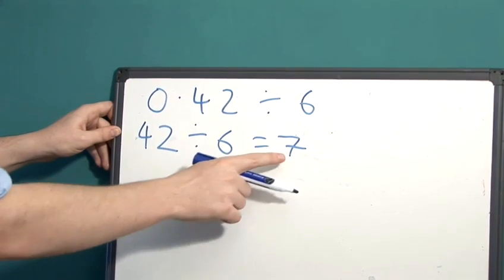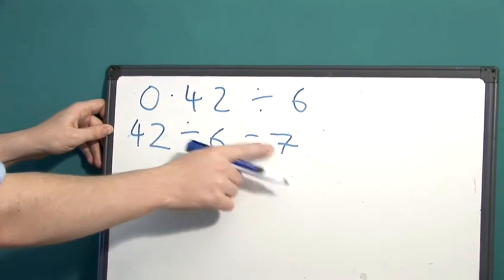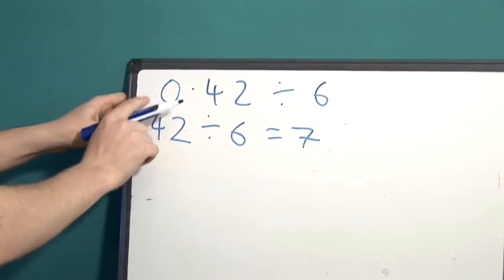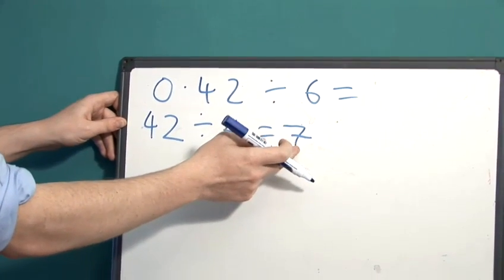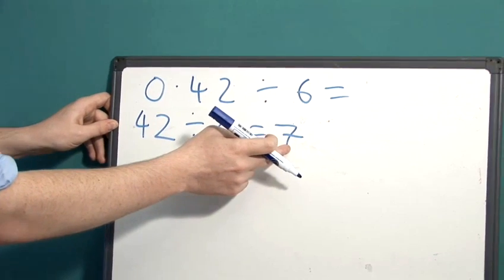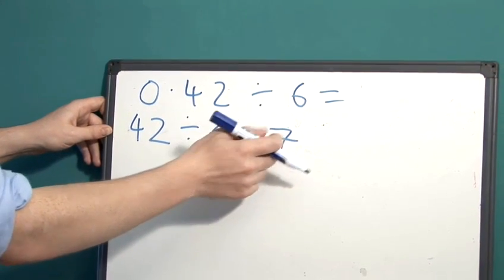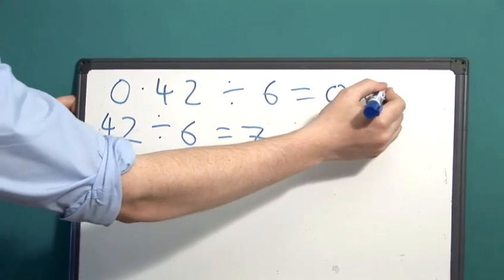But we remember that we are not looking for 7, because we multiplied by 100 here. To get the answer to this question, we need to divide this 7 by 100, which gives us 0.07.